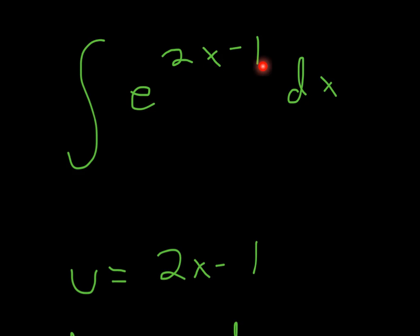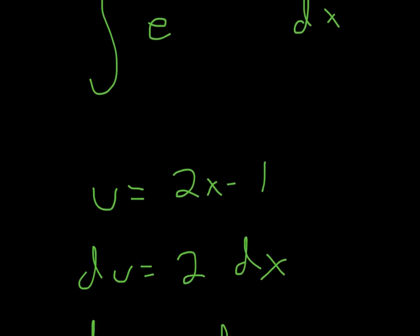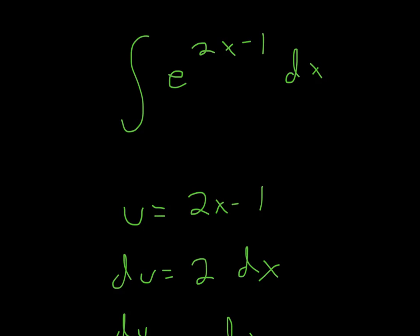So I'm going to say u is 2x minus 1, so du will equal 2dx because the constant goes away, x goes away because of the power rule, and you just get 2dx. Now you look at the actual integral and see if 2 is there.